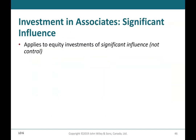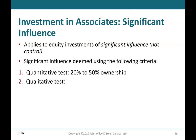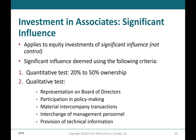Investments in Associates — Significant Influence: applies to equity investments of significant influence, not control. Significant influence is assessed using the following criteria. Quantitative test: ownership between 20–50%. Qualitative test: look at representation on the board of directors, participation in policy making, material intercompany transactions, interchange of management personnel, and provision of technical information.